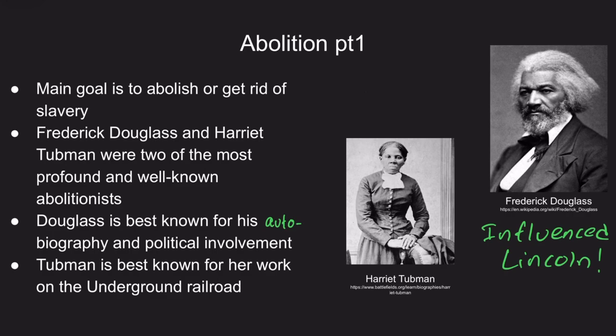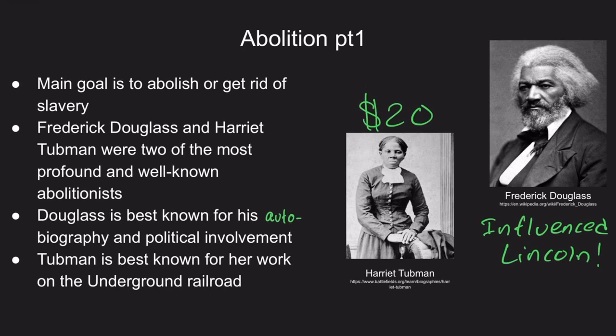Our next abolitionist — gaining traction to become the next face of the twenty-dollar bill, a perfect replacement for an enslaver like Andrew Jackson — is Harriet Tubman. Also born into slavery, Tubman was able to escape, but what makes her truly magnificent is her willingness to return to slave states to help others escape. Her nicknames included Moses, General Tubman, and simply Conductor, since she was a crucial member of the Underground Railroad.